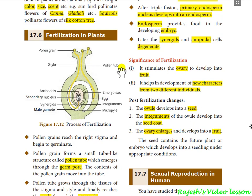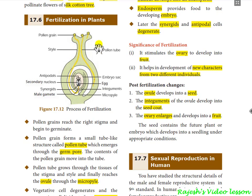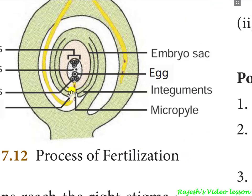The next important topic is fertilization in plants. Once the pollen sticks on the stigma, it produces a pollen tube. The stigma has nutrition for the growing pollen tube, so the pollen tube grows and moves inside the ovary, reaching the ovule through the micropyle. It then reaches the embryo sac, producing two cells: a generative cell and a vegetative cell, which then produce two sperms.